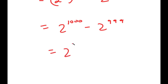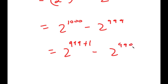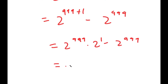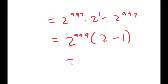Now to solve this, I'm going to write 2 to the power of 1000 as 2 to the power of 999 plus 1. So I get 2 to the power of 999 times 2 to the power of 1, minus 2 to the power of 999, which is equal to 2 to the power of 999 times (2 minus 1), which is equal to 2 to the power of 999.